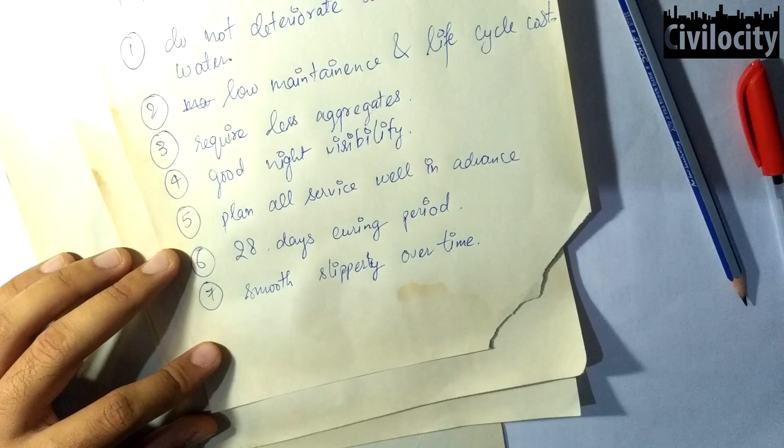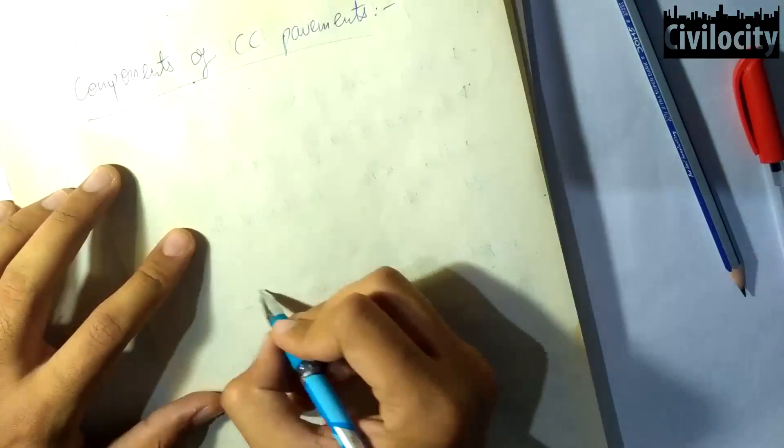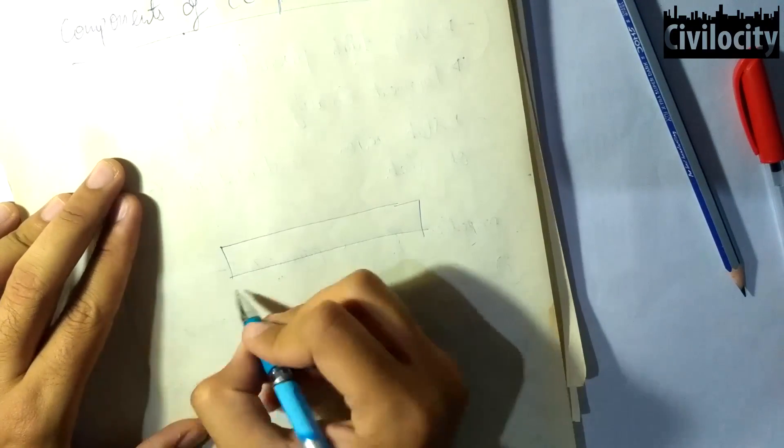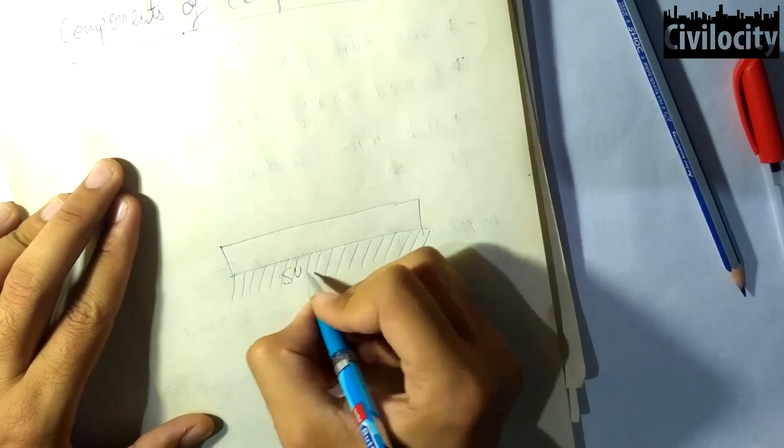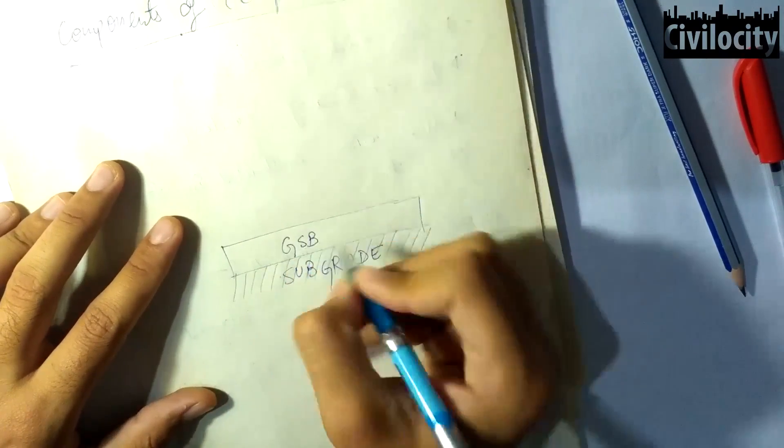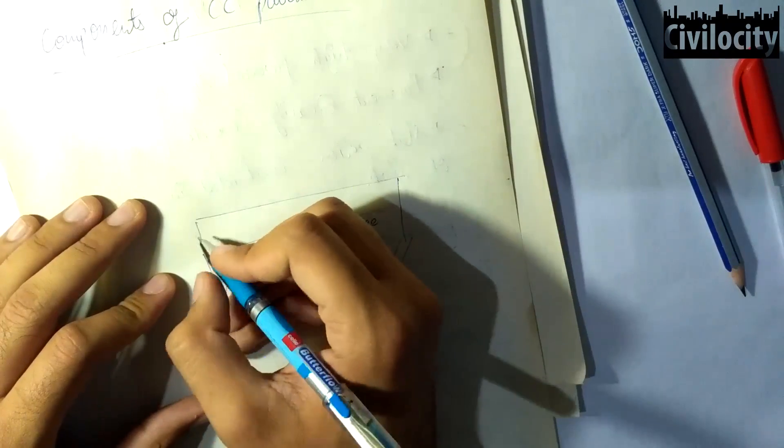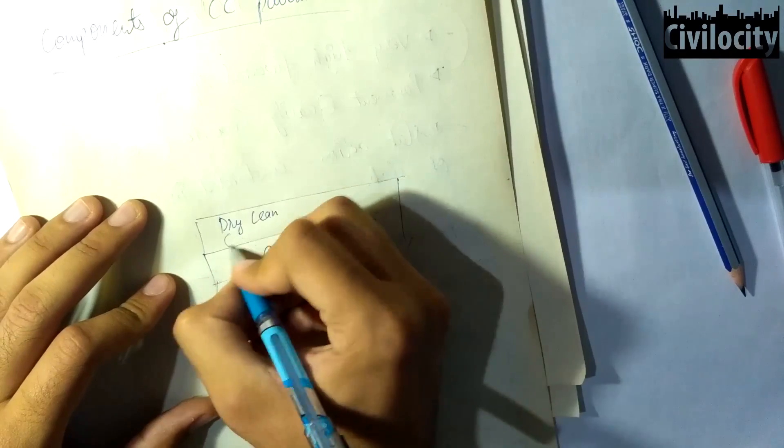So these were some of the properties of cement concrete pavements. Now let's talk about the components used in cement concrete pavements. Similar to the flexible pavements, rigid pavements are also constructed in a number of layers. Our lowest layer is our subgrade, above it there is a granular subbase or drainage layer, above it there is a dry lean concrete subbase layer.